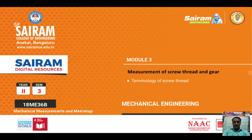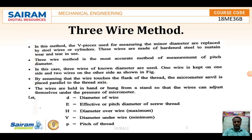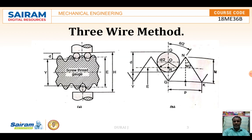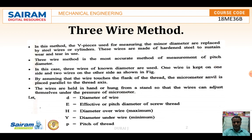Good morning everyone. In this video we are going to discuss the measurement of the 3-wire method. In this measurement of 3-wire method we are using 3 wires. We are going to keep the 3 wires over here. The distance between these 2 cylinders is H. The effective diameter is E. Normally with the help of this 2-wire method and 3-wire method we are going to measure the effective diameter.